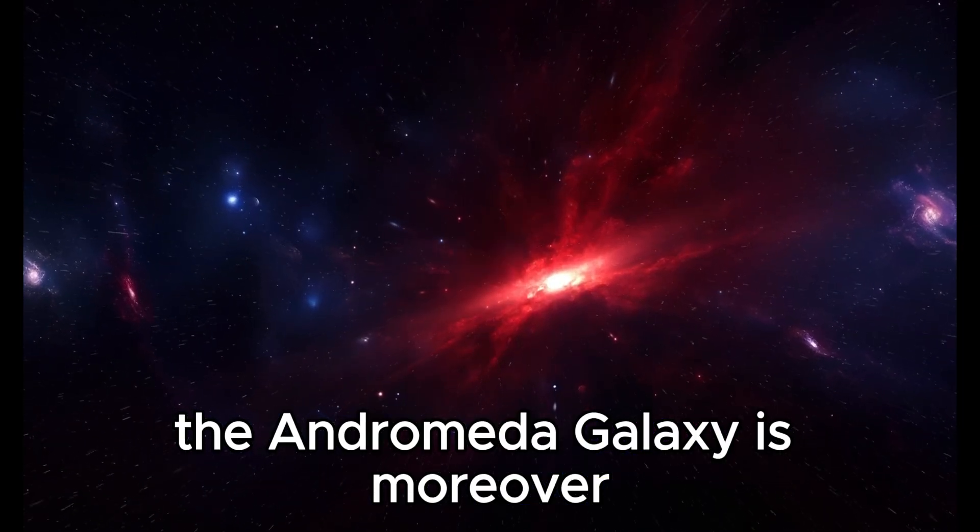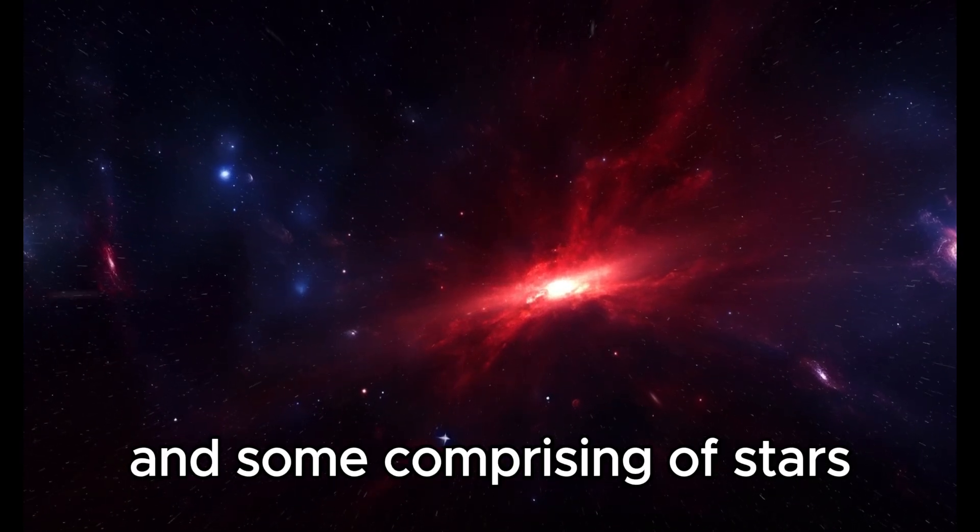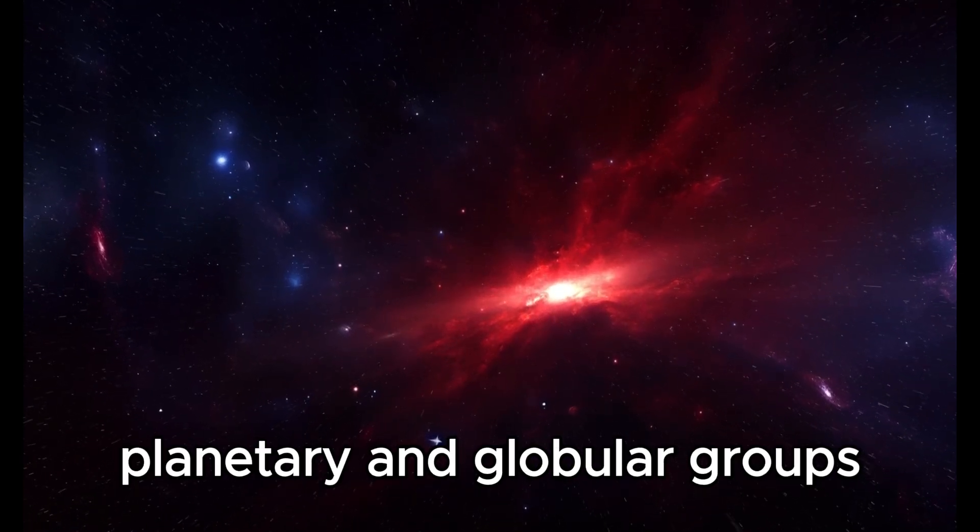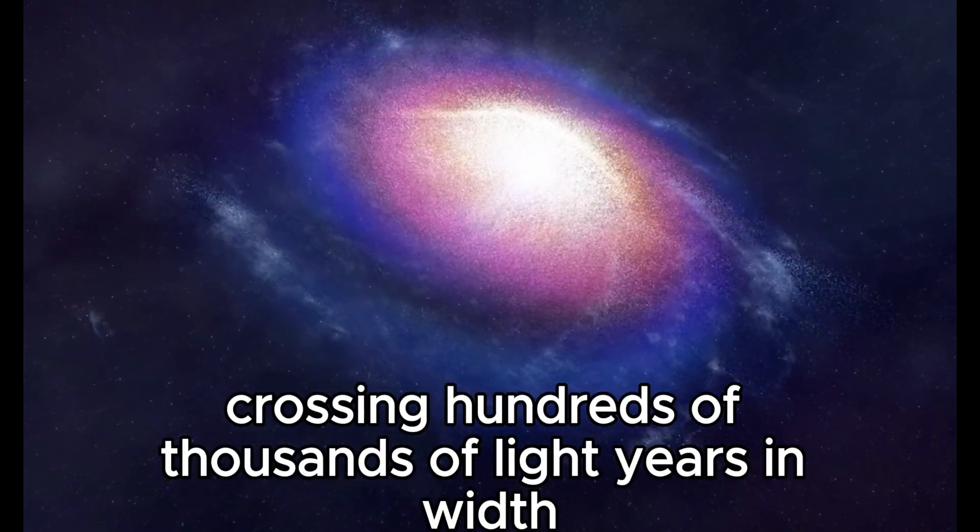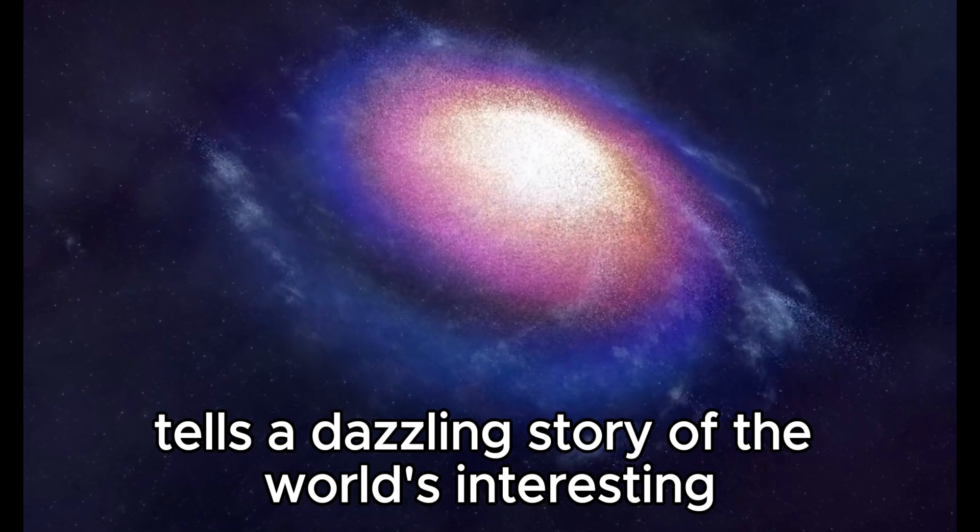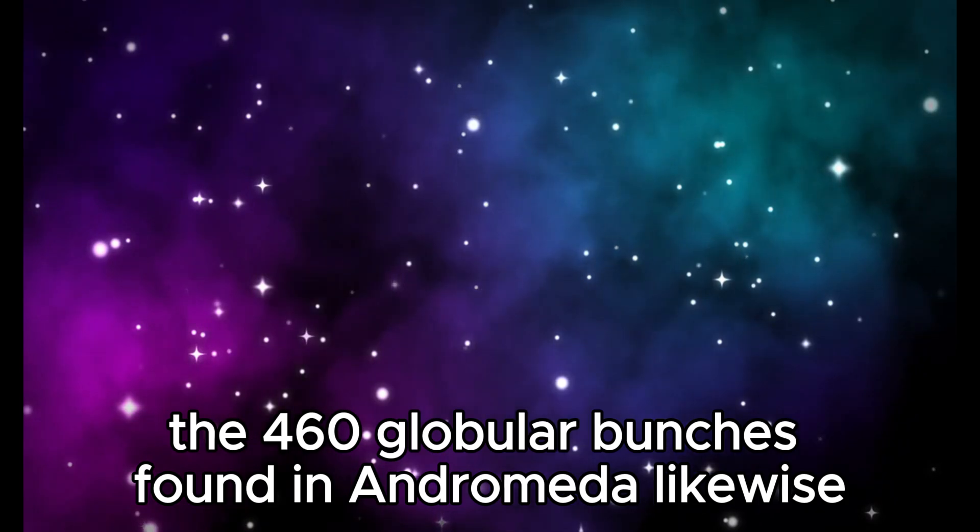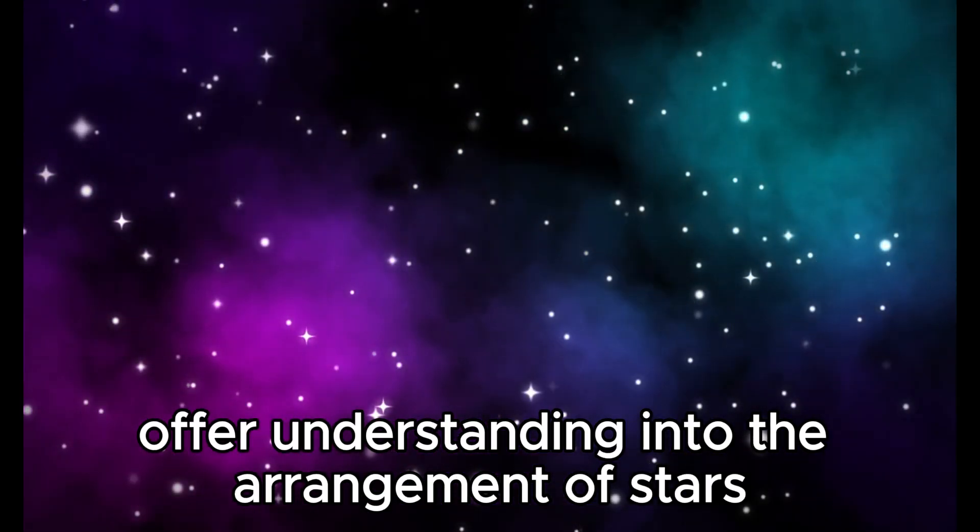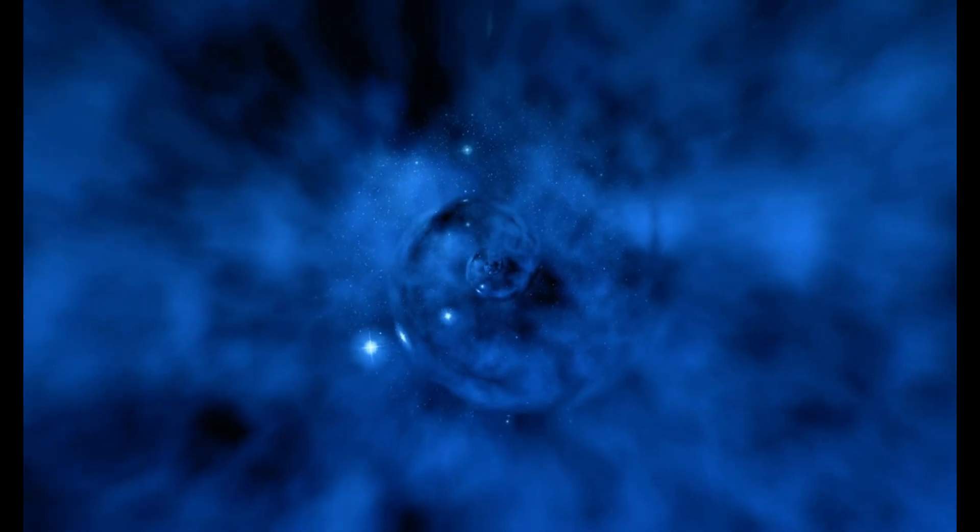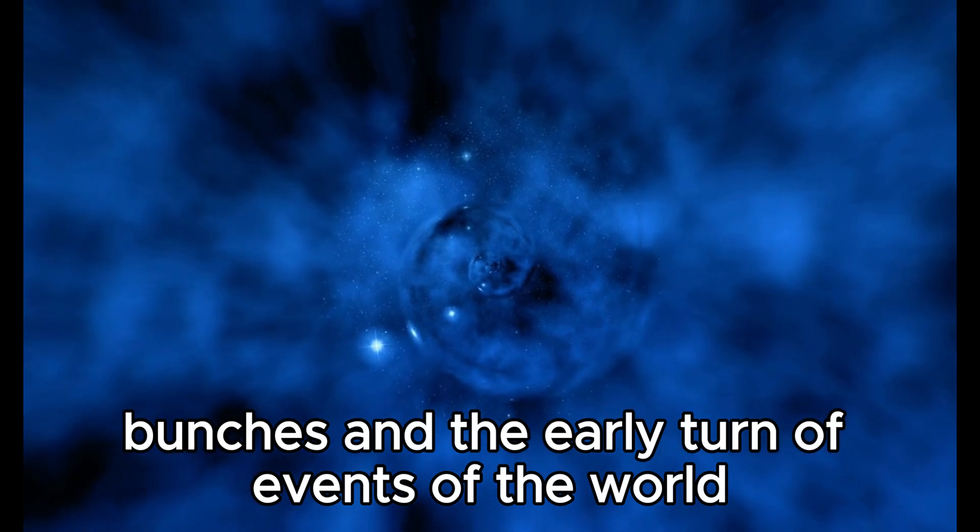The Andromeda galaxy is moreover enclosed by a circle of heavenly flume and some, comprising of stars, planetary and globular groups, and crossing hundreds of thousands of light-years in width. This vast covering tells a dazzling story of the world's interesting beginning in history. The 460 globular bunches found in Andromeda likewise offer understanding into the arrangement of stars in the beginning phase, giving a clear clarification of the arrangement of star bunches and the early turn of events of the world.